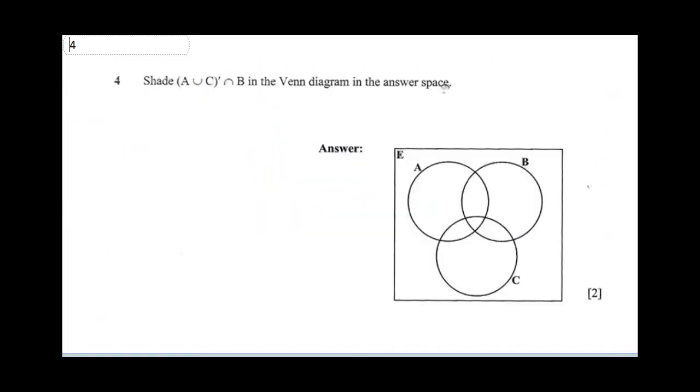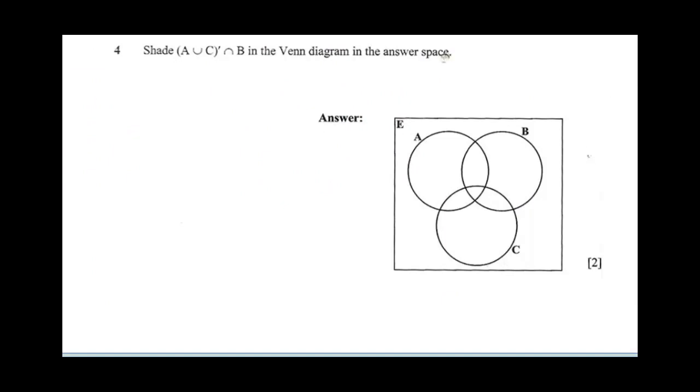Question 4 says shade (A ∪ C)' ∩ B. First, let's draw our Venn diagram. This is 1, this is 2, this is 10. Let's call here A, here B, and here C. Now let's do A ∪ C complement. When you're shading A ∪ C complement, that means you don't have to include anything inside A ∪ C. You have to shade anything that is not inside A ∪ C.